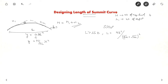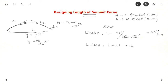By IRC standard, the height of eye level is 1.2 m and the object height is 0.15 m, so you get L = NS² / 4.4 when L > SSD. If L is less than SSD, the formula becomes: L = 2S − (√(2H) + √(2h))² / N, which equals 2S − 4.4 / N. This is the design for stopping sight distance.